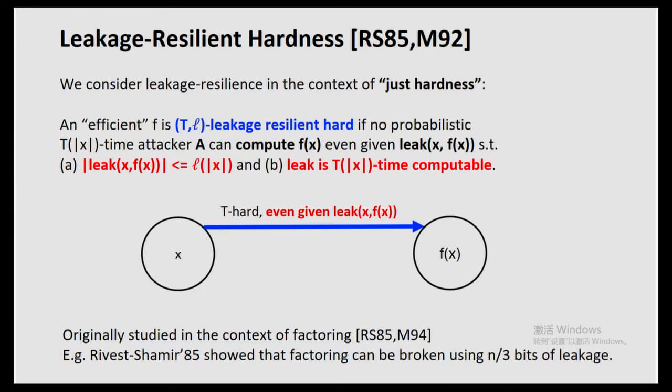To recap: Maurer 1994 showed that n^epsilon bits is all you need to compute the factoring function. That's the state of the art from decades ago, so it's not crazy for us to assume that the factoring function is actually hard even with the presence of n^epsilon bit leakage. I looked it up this morning — they leave it as an open problem to determine whether n^epsilon bit leakage can break factoring or not. I guess it's still open.